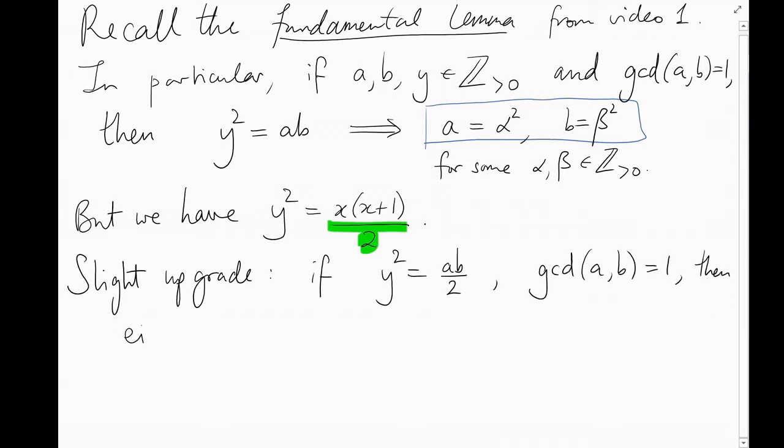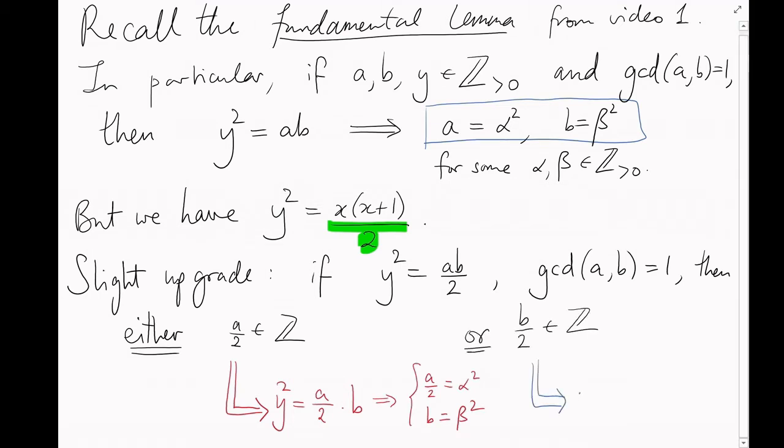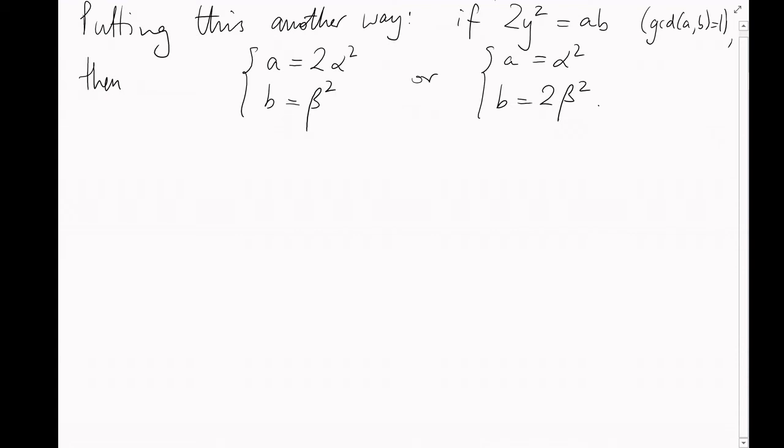If y squared equals a times b over 2, with a and b having greatest common divisor equal to 1, then, since both sides are integers, that factor of the 2 in the denominator must be cancelled out somewhere in the numerator. So, either a over 2 is an integer, in which case we can just apply the fundamental lemma to a over 2 and b, or b over 2 is an integer, in which case we can apply the fundamental lemma to a and b over 2. Putting this another way, if 2y squared equals a times b, then either a equals 2 alpha squared and b equals beta squared, or a equals alpha squared and b equals 2 beta squared. That factor of 2 on the left has to be given to either a or b.